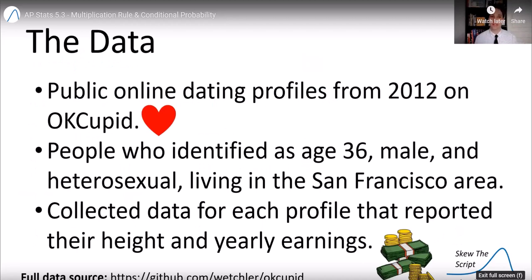Let's talk about this data set one more time. These were data from online dating profiles that were made public, that were publicly listed in 2012 on the site OKCupid. We filter for the people who were age 36, male, and heterosexual living in the San Francisco area. And we collected data for each profile that reported their height and yearly earnings. The full data set is linked down below.